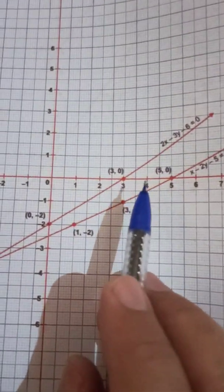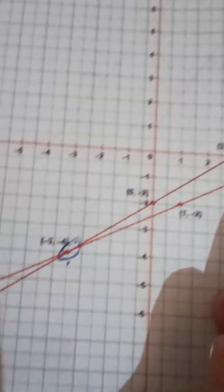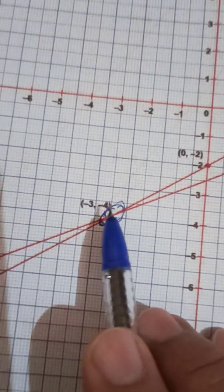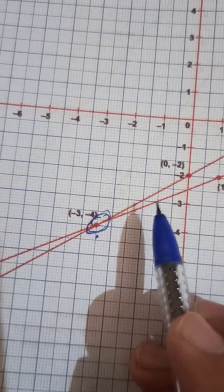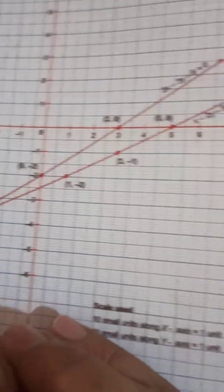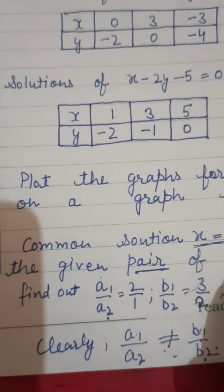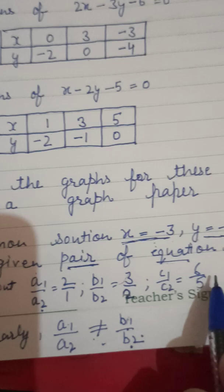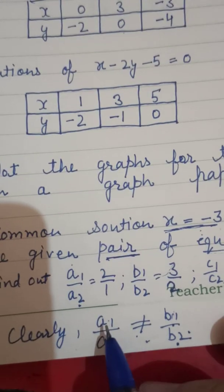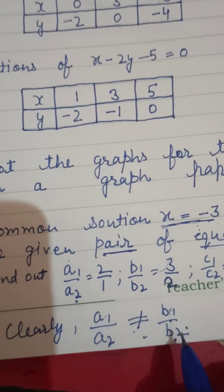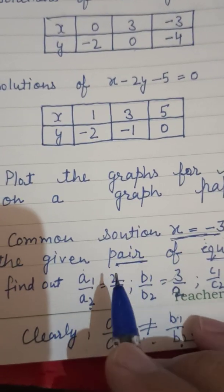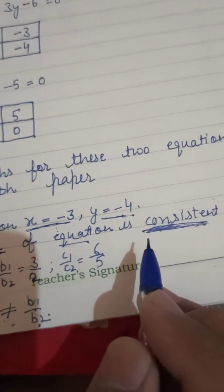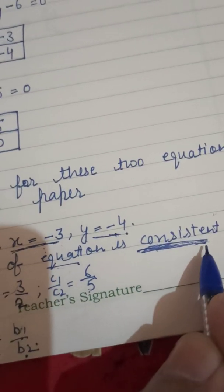When we plot the graph using these points, we find that the graphs are intersecting at the point (-3, -4). Since there is an intersecting point, the equations have a unique solution. The condition is a1/a2 ≠ b1/b2, and since the pair of equations has a unique solution, the given pair of equations is consistent.